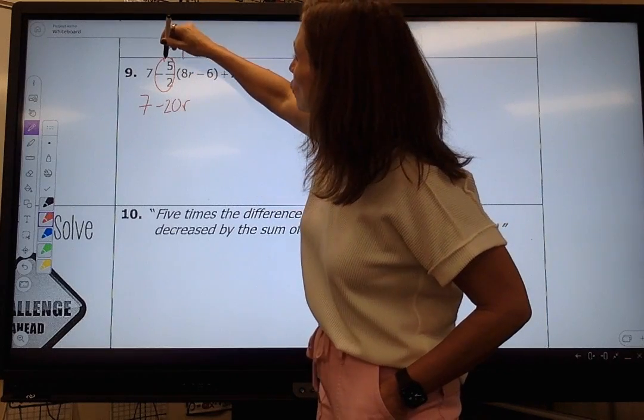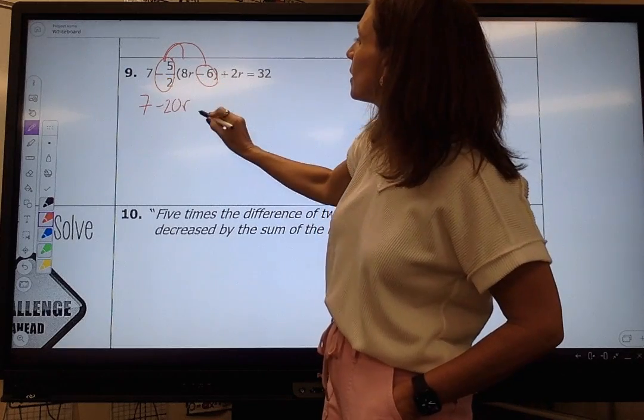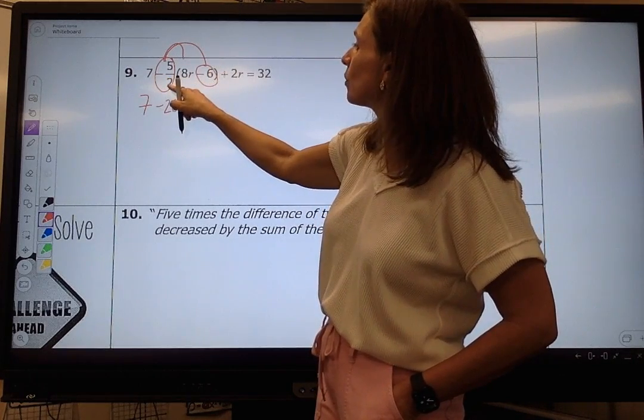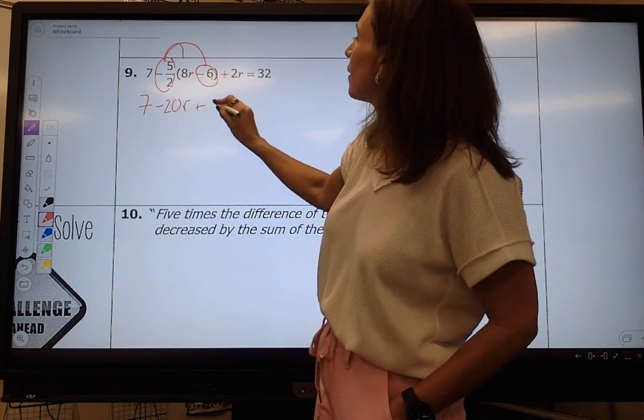Here and now I'm going to distribute a negative 5 over 2 times a negative 6. A negative times a negative is a positive. Two and 6 can cancel out. Two goes into 2 once. It goes into 6 three times. And 3 times 5 is 15.